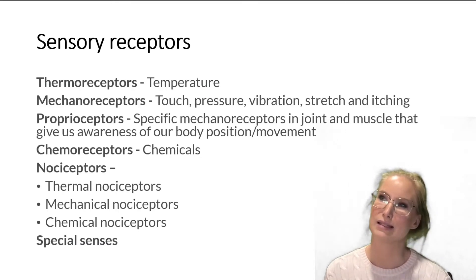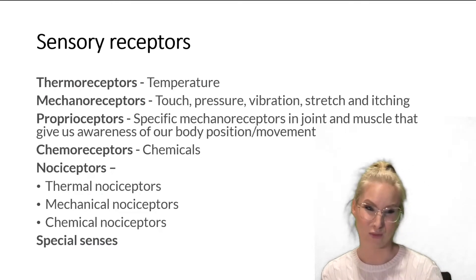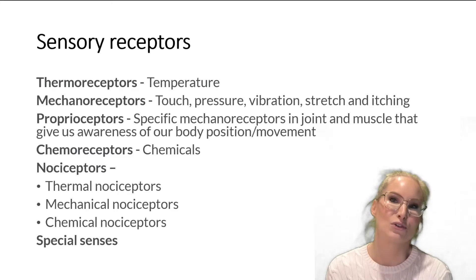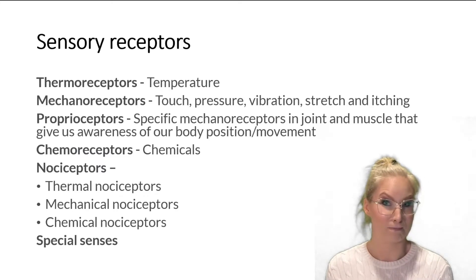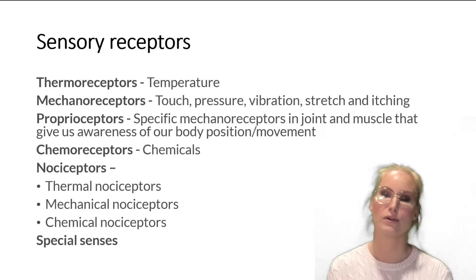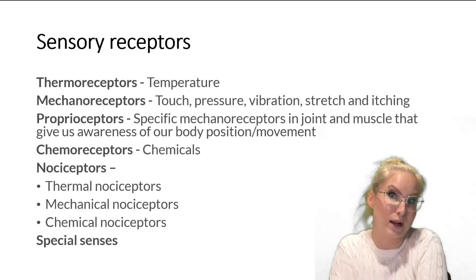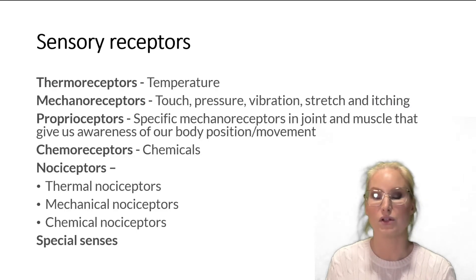Now, you're probably wondering, what's the difference between a thermoreceptor and a thermal nociceptor? Well, it really just comes down to the threshold of that receptor. So, for example, a thermoreceptor would be working within the range of, say, 33 degrees Celsius. That's when it's active and telling the brain that your body is operating at a certain temperature.